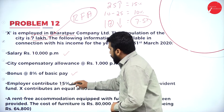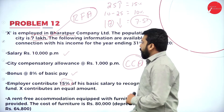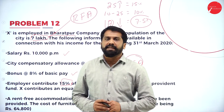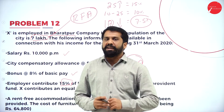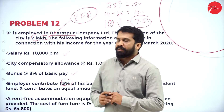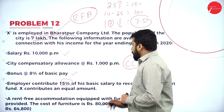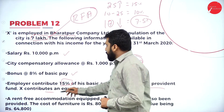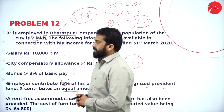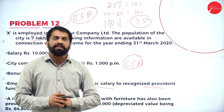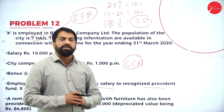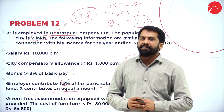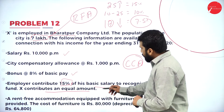Employer contribution is 15% to recognized provident fund. The exemption limit is 12% — whatever paid in excess of 12% should be considered taxable. X contributes an equal amount, but we are only concerned with the contribution made by the employer. Whatever contribution the employer makes is what is important for us.